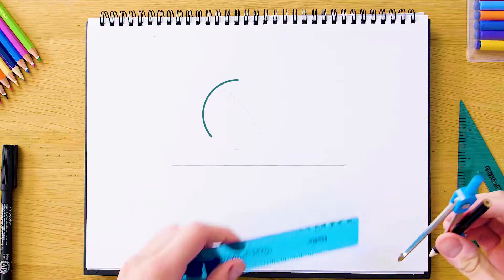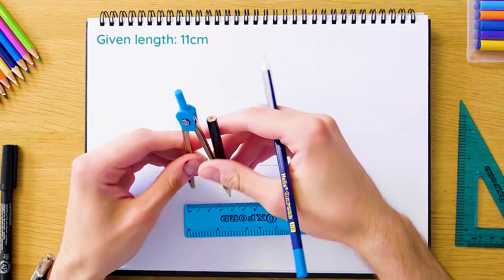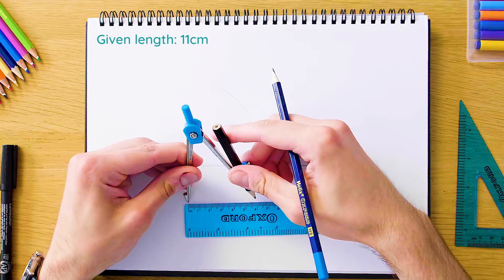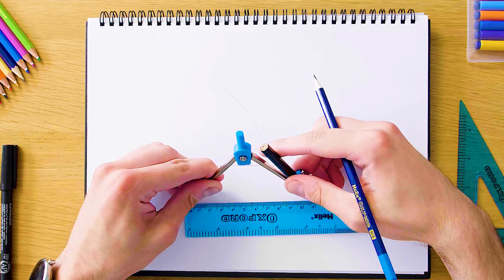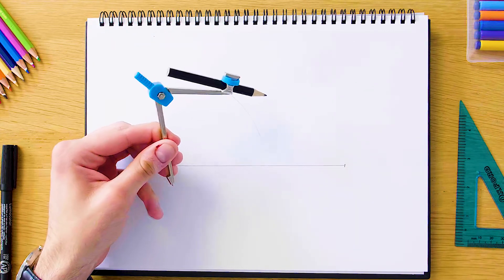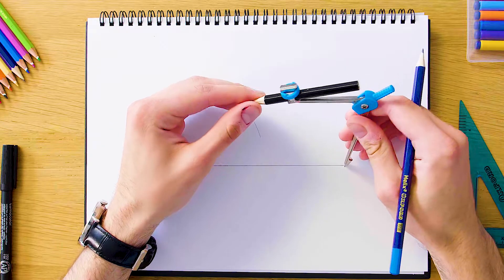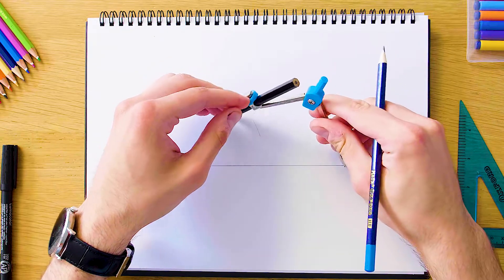Now we're going to do the same thing for 11 centimeters, so we're going to set our compass to 11 centimeters, make sure it's exactly 11, and we're going to swing this up above the triangle as well so it crosses with our arc that we swung for 8 centimeters.